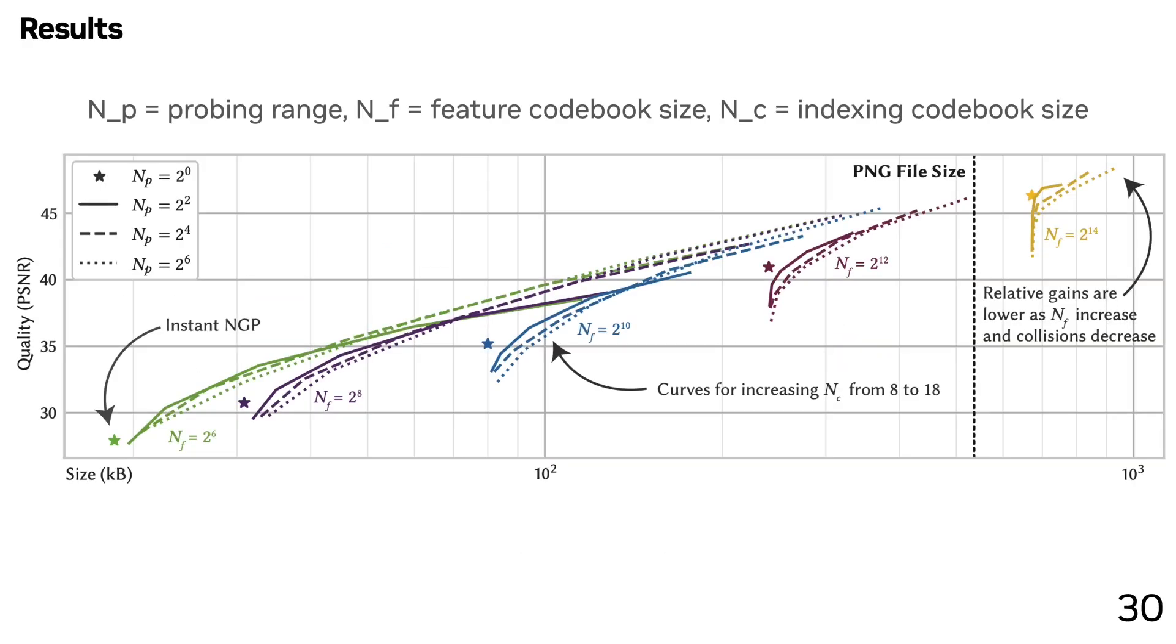Here are some results that show the quality-size trade-off for our method. We see a couple of interesting things. First, we see that the difference in probing ranges denoted by the dotted, dashed, and solid lines doesn't make a huge difference. This is amazing news because probing ranges influence training costs significantly, but we see that it doesn't really matter when the probing range is too much. Second, we see that we're able to successfully get a much better trade-off than Instant NGP, which is shown as the stars. We specifically see that we get a much larger improvement in quality from using indexing when we use smaller codebooks, which matches our intuition.